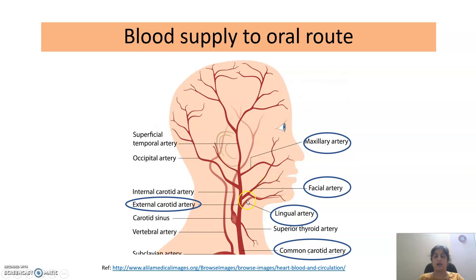These three arteries are connected through an artery called the external carotid artery, which further connects to the common carotid artery. So we can see that the oral cavity is a highly vascularized area provided with a continuous supply of blood capillaries.